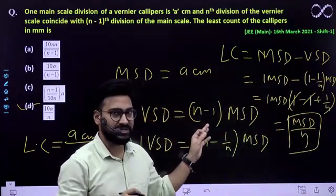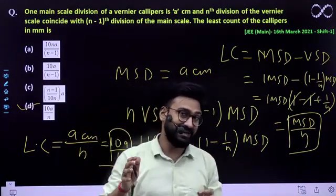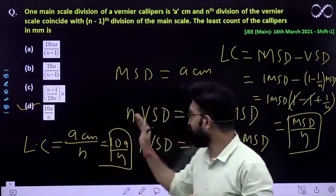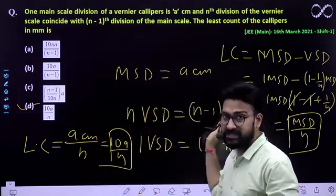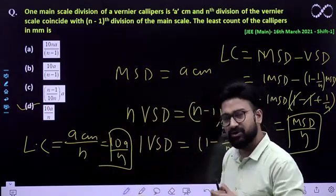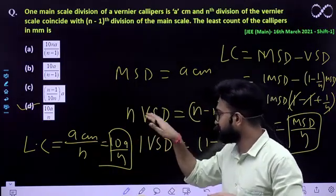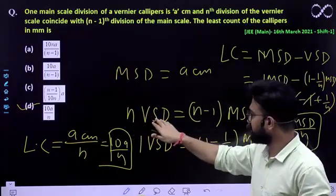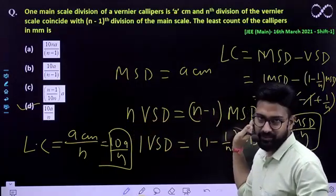And this is a very easy question because most of the time in vernier calipers, you're given that n VSD equals (n-1) MSD. Generally, you must have seen in vernier calipers that 9 divisions of vernier scale equals 10 divisions of MSD.